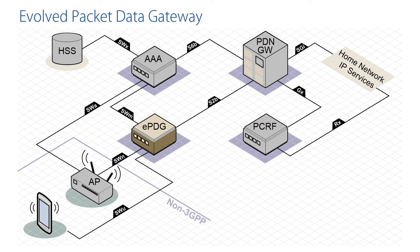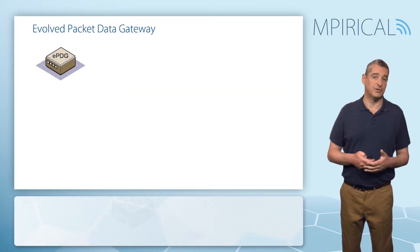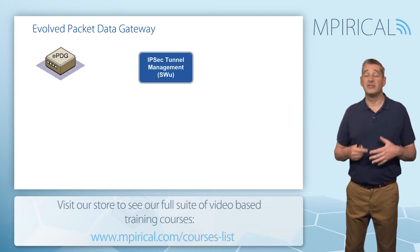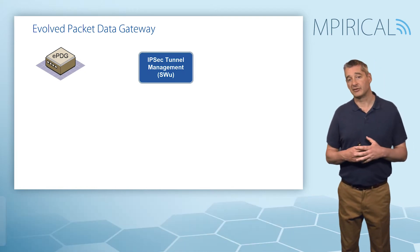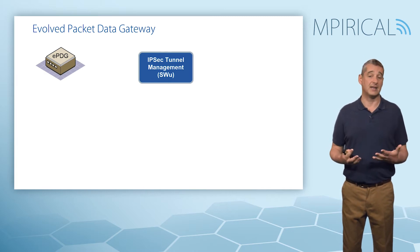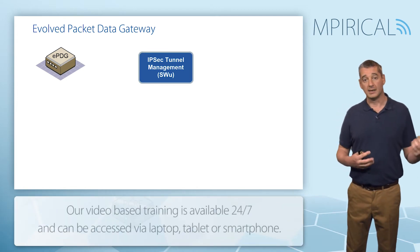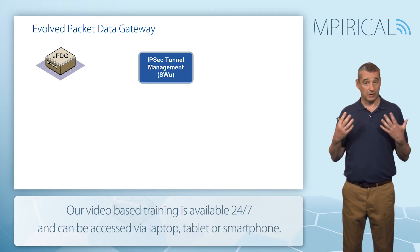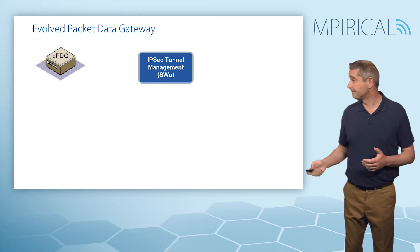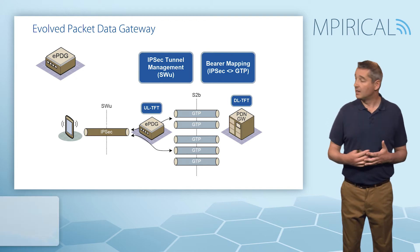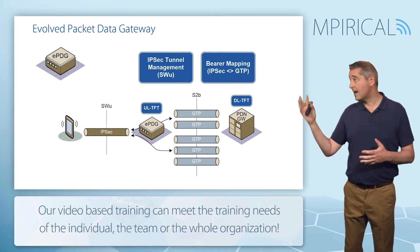The next network element is the ePDG, the Evolved Packet Data Gateway, which has a number of responsibilities. The first is IPSec tunnel management. Because we're operating on an untrusted non-3GPP access network, we assume the Wi-Fi connection is insecure. As such, we build an IPSec tunnel between the mobile and the ePDG, so traffic passing across this IPSec will be protected through encryption and integrity protection. In addition, we also have bearer mapping across the SWU interface between the mobile and the ePDG.